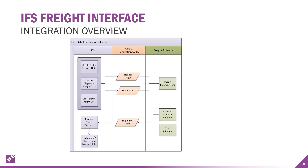The basic change here is we're using an ODBC connection to IFS. From the IFS side, we're creating the order delivery note and creating the shipment freight data. We can utilize this on an RMA so you can get freight data back onto an RMA from the shipping system as well. There's a header and detail view, and you import that information from IFS over into the freight software through this connection method.